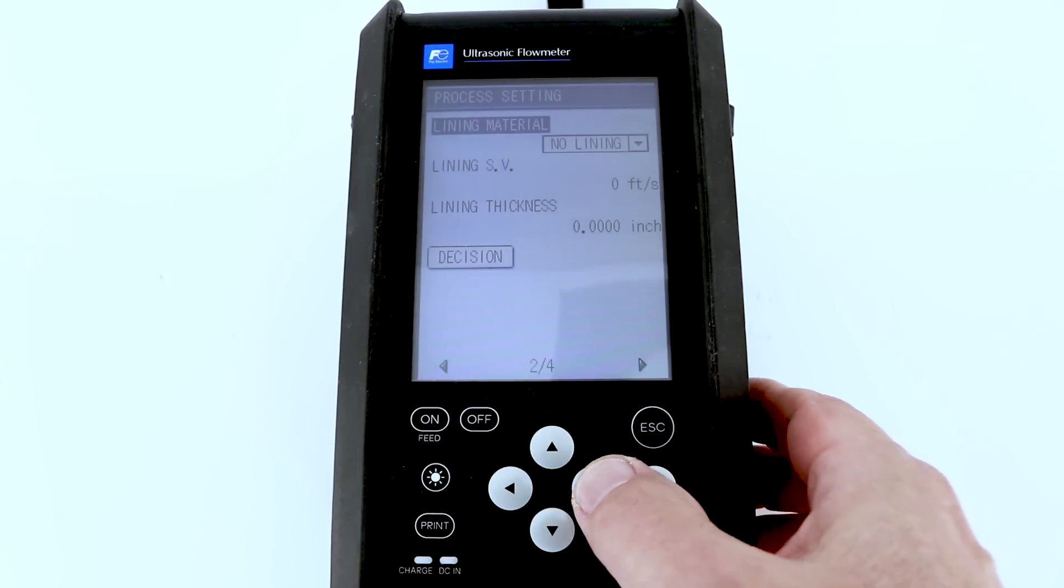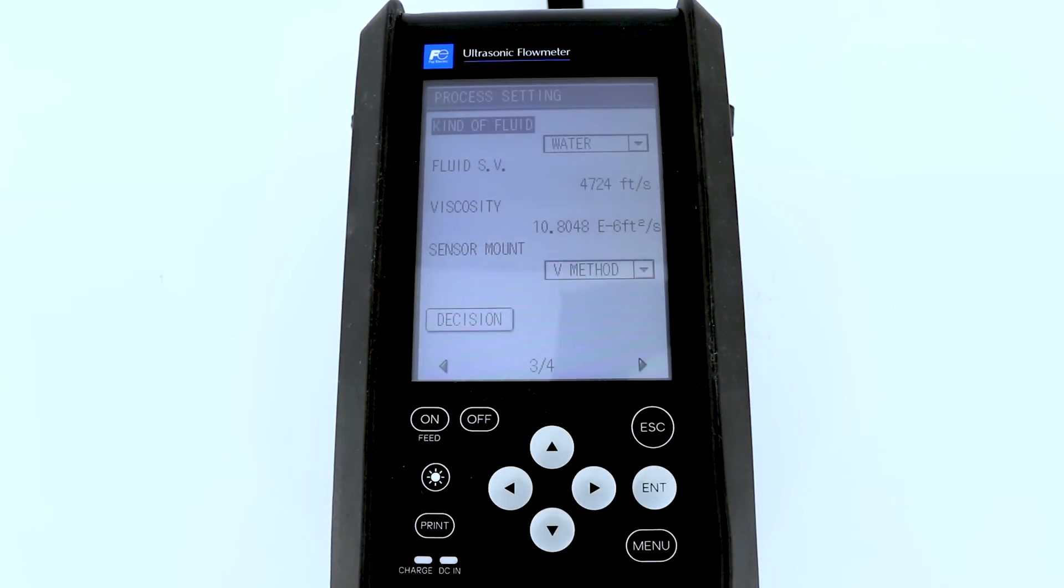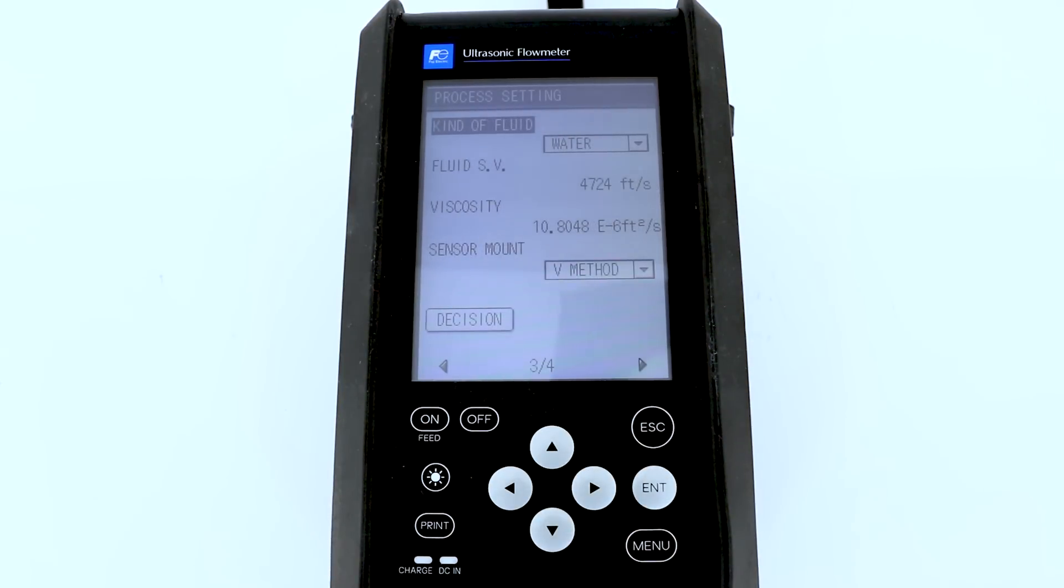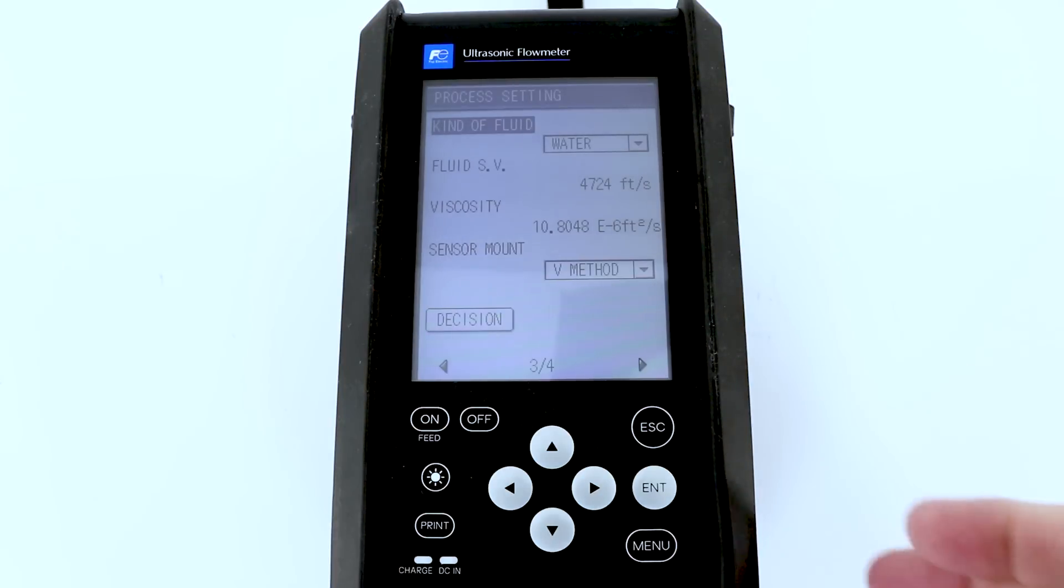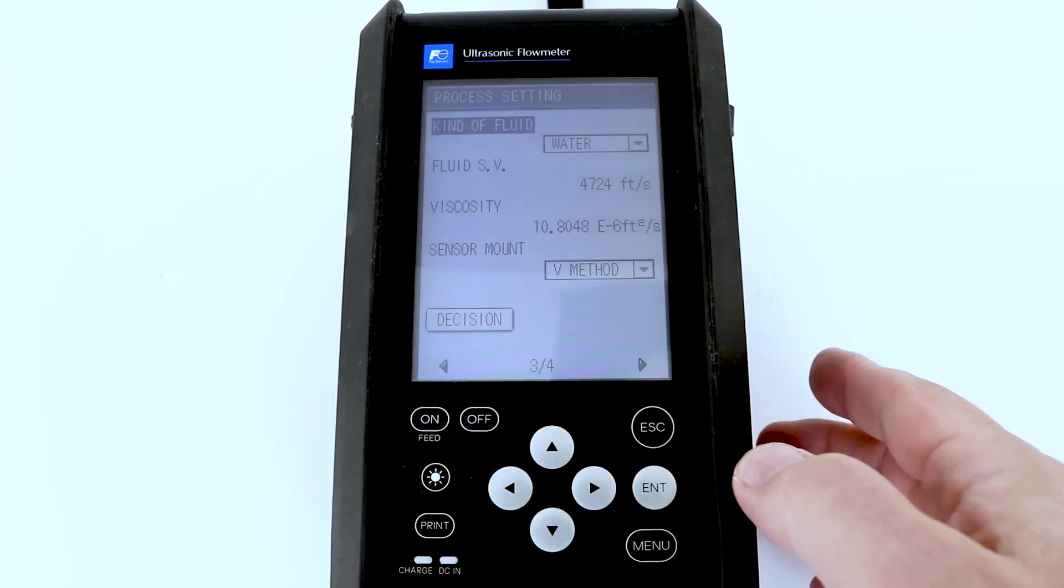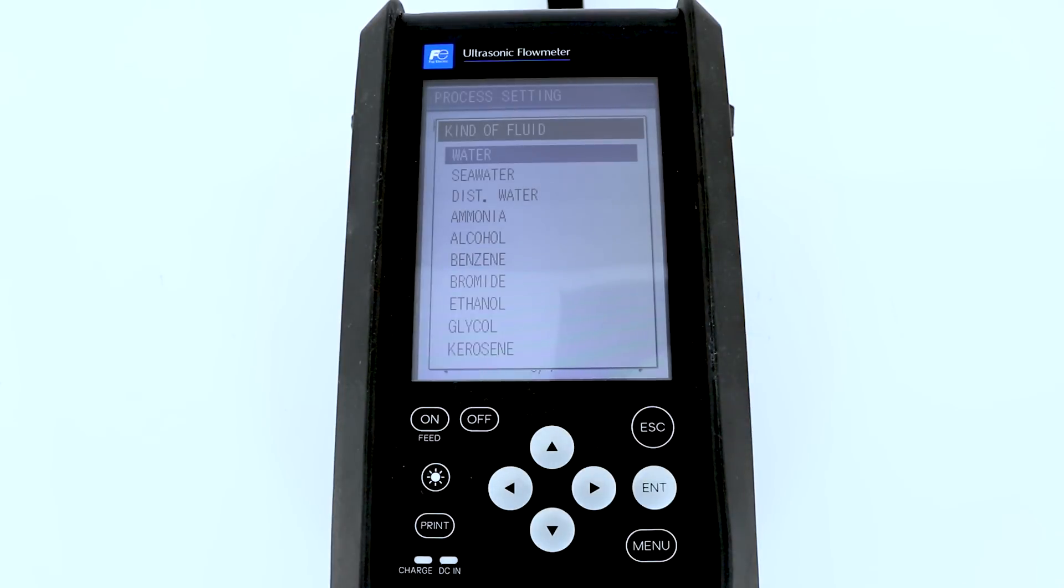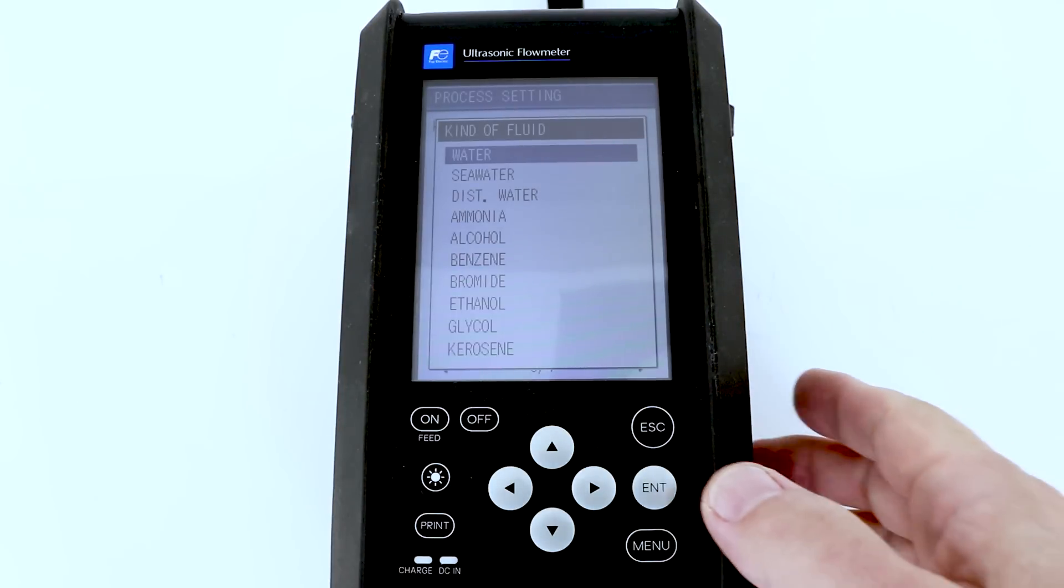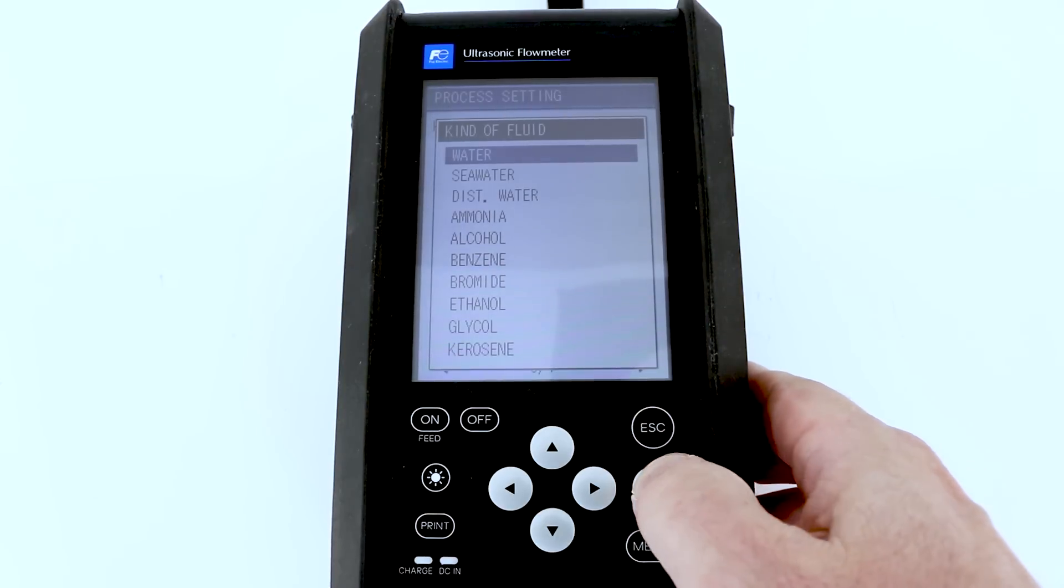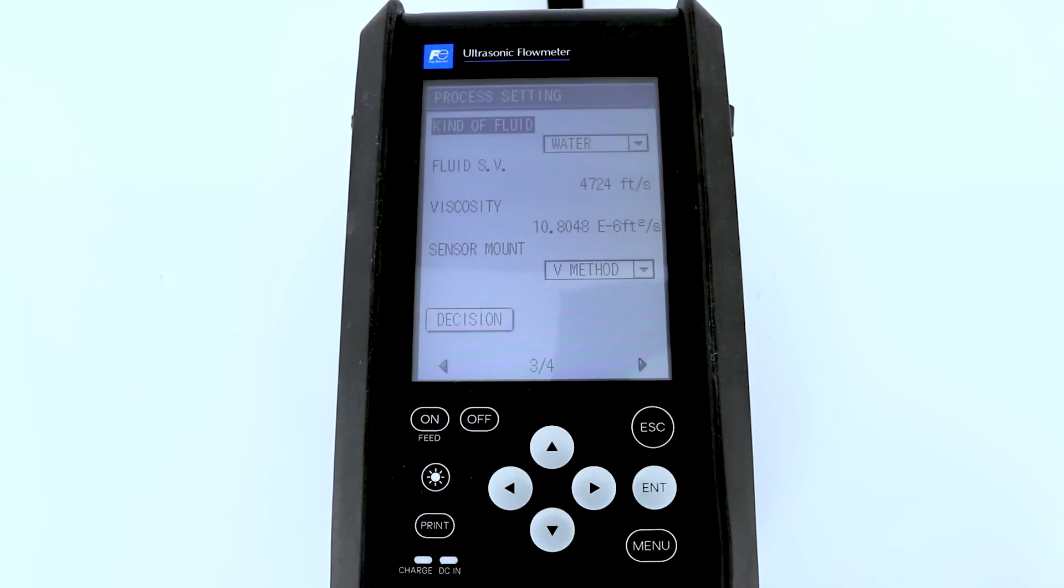The next page is the type of process liquid or fluid you're going to work with. And 99% of the time, it's going to be water. If you were to change it to something else, we would just hit enter. And now we have a drop-down menu of a whole host of different flavors of liquid. And you could just scroll down and pick what you want. In this case, we're selecting water. Then it fills out all that information so you don't really have to do anything other than to go down to the sensor mount.